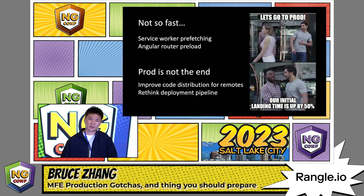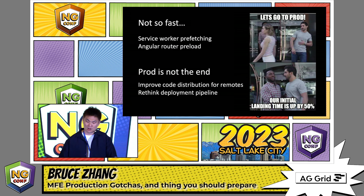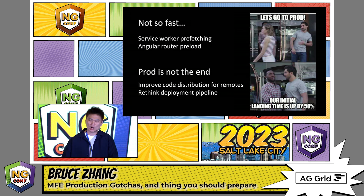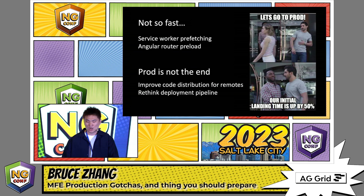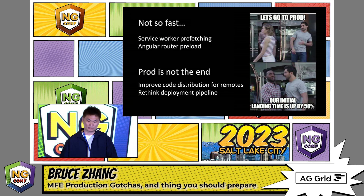Going to production is not the end — it's just the start of making your application more flexible and scalable. There are a lot more things to think about: How do you want to distribute your remotes — by teams or by features? How do you coordinate individual team deployments? How do you do hotfixes? How do you do rollbacks? All these problems can be tackled and improved later down the road.